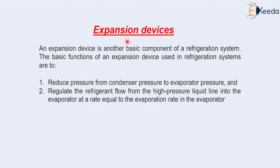Expansion devices are another basic component of a refrigeration system, just like the evaporator, condenser, and compressor. The basic functions of an expansion device used in a refrigeration system are: first, to reduce pressure from condenser pressure to evaporator pressure; and second, to regulate the refrigerant flow from the high pressure liquid line into the evaporator.